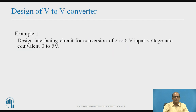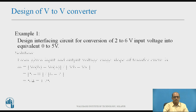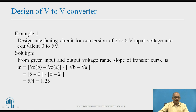Design of V-to-V converter. Let us solve this design example: design an interfacing circuit for conversion of a 2 to 6-volt input voltage into an equivalent 0 to 5-volt output. From the given data, the input changes from 2 to 6 volts and output from 0 to 5 volts. The slope M is obtained by M = ΔV-o / ΔV-in = (V-ob − V-oa) / (V-b − V-a) = (5 − 0) / (6 − 2) = 5/4 = 1.25.